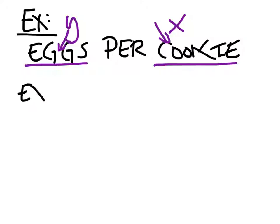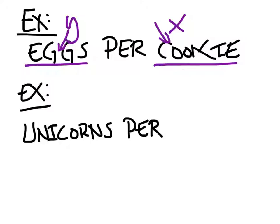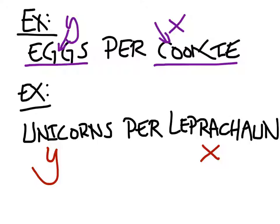Let's do another example. Unicorns per leprechauns. If you saw it like this, which one would be dependent? The unicorns are dependent upon the leprechauns. Like Olivia was just saying, once you see this word per, like what cats do, it's the one after that.